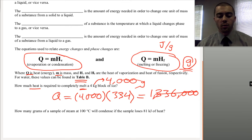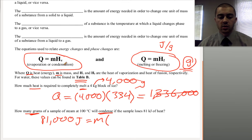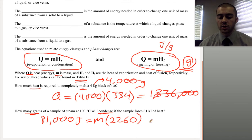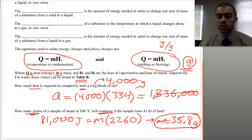For the second example, the heat is 81 kilojoules — we convert that to 81,000 joules. We're dealing with condensation, so we use the heat of vaporization. The value from Table B is 2,260 joules per gram. So 81,000 equals mass times 2,260. Dividing both sides by 2,260 gives us M equals about 35.8 grams — that's the mass of steam that could be condensed by losing that much heat.